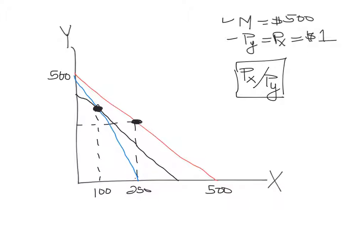So that's our third budget line. So we have the red line, which is our first budget line, the blue line, which is the budget line with the tax on consumption, and then the black budget line, which is a tax on income. Both of these taxes collect $100 to the government.